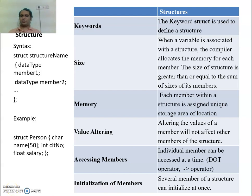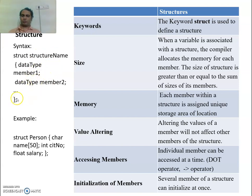Let us try to understand the concept of structures. First, let us look at the syntax. The syntax is: struct followed by the struct name, then open curly braces and closing curly braces. In between, you mention the members, and there is a semicolon after the closing brace. This is very important — people generally forget this semicolon, which gives a syntactical error. Members may have different data types.